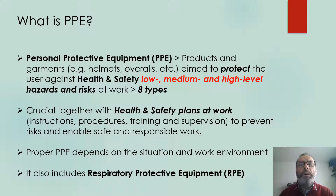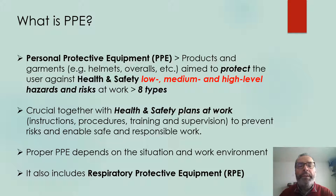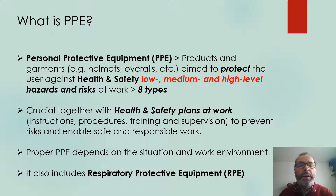Personal protective equipment, also called PPE, are products, garments, and implements such as helmets, overalls, and many others, whose aim is to protect the user and the worker against health and safety hazards and risks that can be of low, medium, or high level. There are eight types, and they are very important together with broader health and safety plans at work. The proper use of PPE depends on the situation and the working environment. It also includes a specific type of equipment called respiratory protective equipment, or RPE.